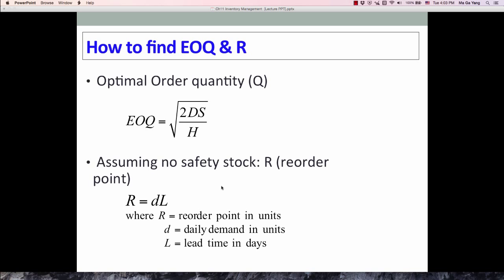So when you sum up, economic order quantity or Q or optimum order quantity equals square root 2 times D times S divided by H. And then assuming that there is no safety stock, our reorder point equals daily demand times lead time in days.